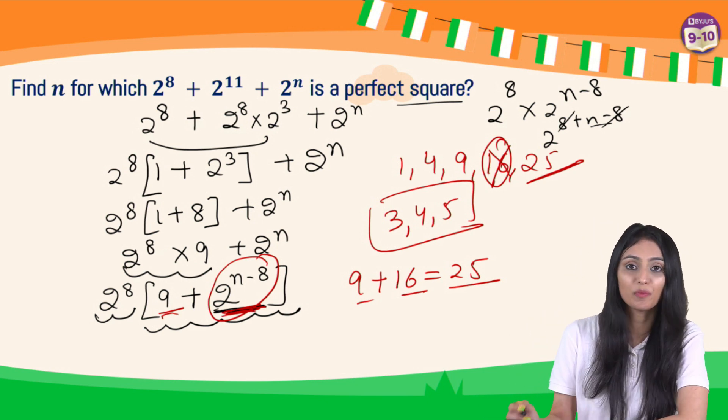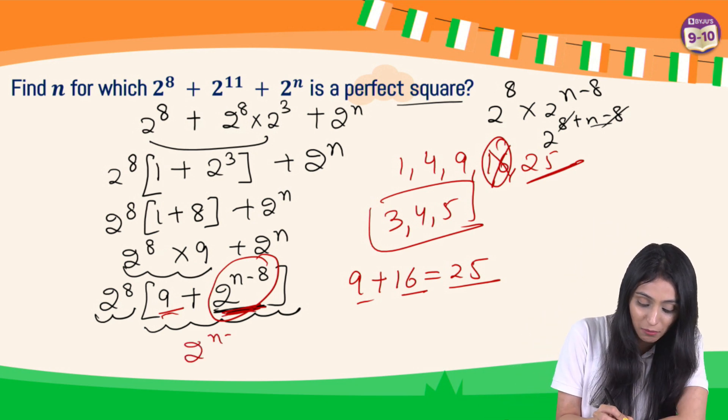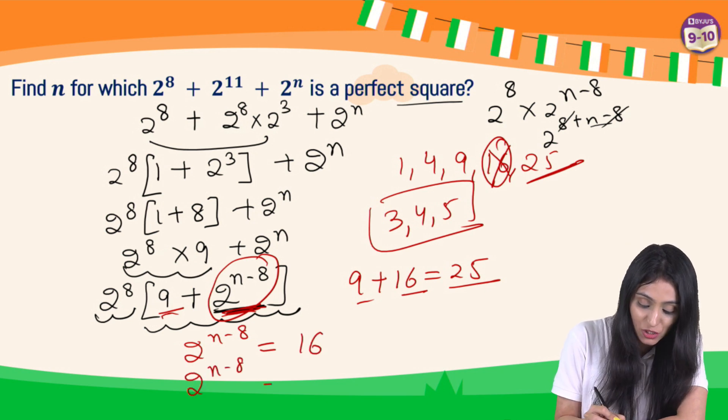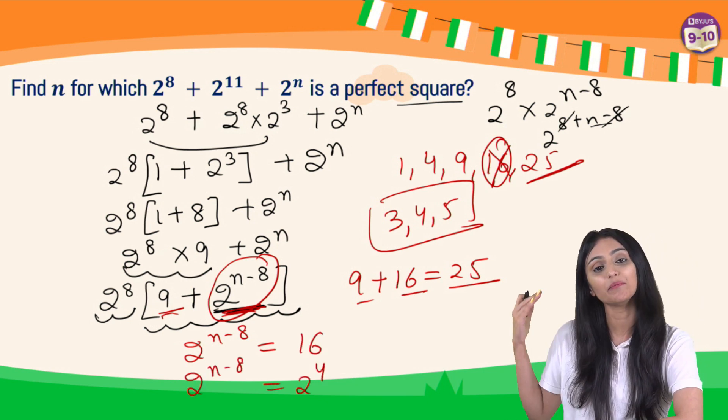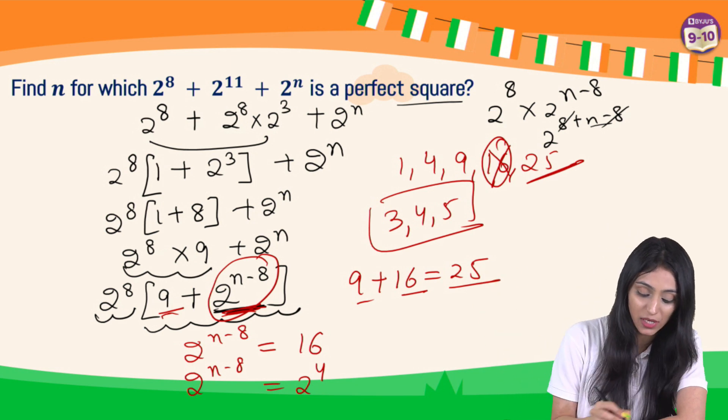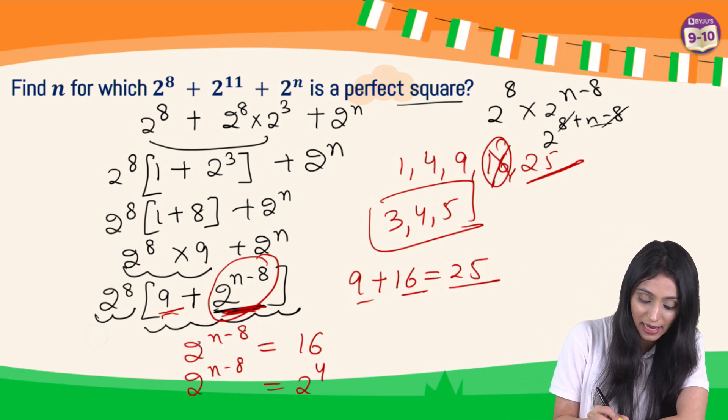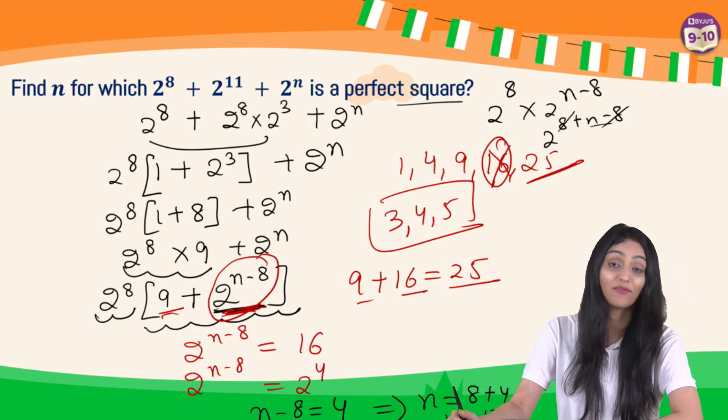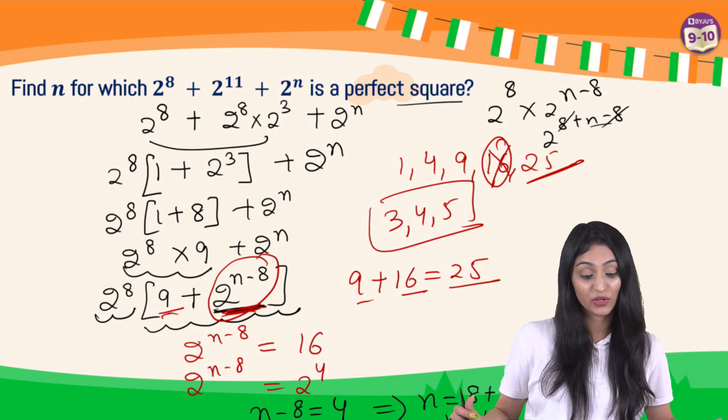So that means this should be equals to 16 in that case. So 2 to the power n minus 8 should be equal to 16, and 16 could be written as 2 to the power 4. And we know that when bases are same we can equate the powers. So in that case, n minus 8 would be equals to 4. I can say that n would be equals to 8 plus 4. So n would be equals to 12. The value of n should be 12 over here, so that this entire expression becomes a perfect square.